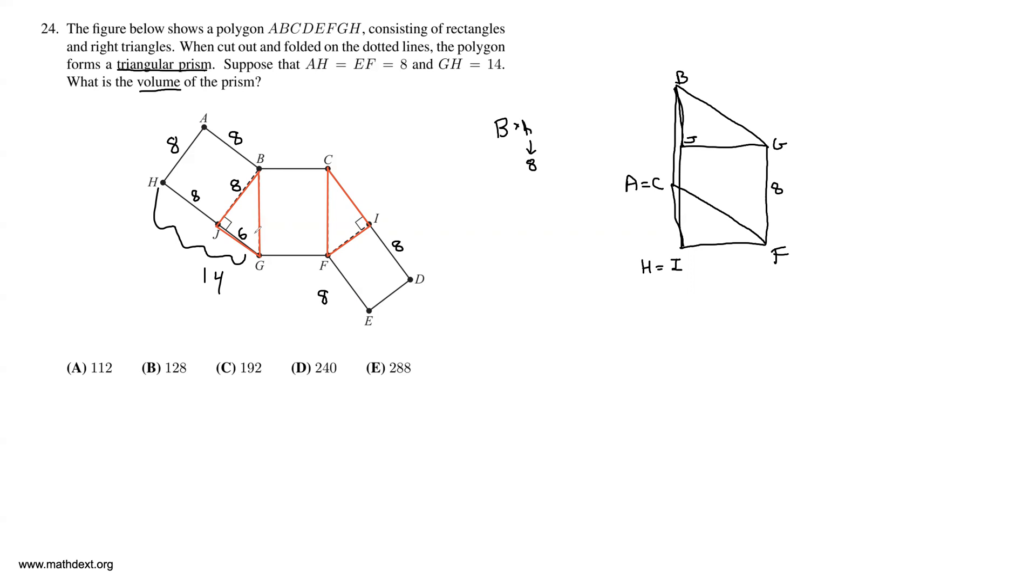And that's really nice because we finally have a way to figure out the area of the base of our prism, which is a right triangle with leg lengths 8 and 6. And the area of this right triangle is half times 8 times 6, which is 24. Finally, the volume of this prism is the base, which is 24, times the height, which is 8, which yields a final answer of 192. So our answer is C.